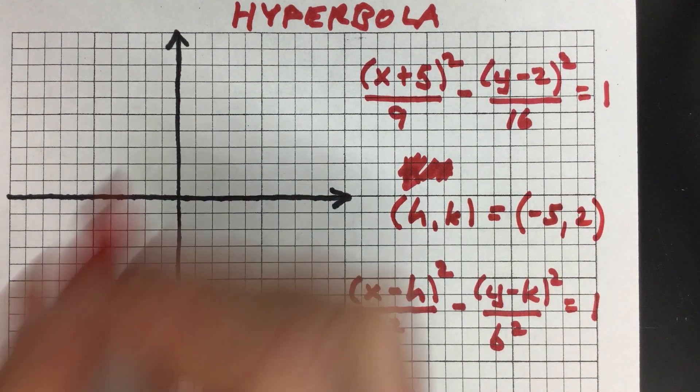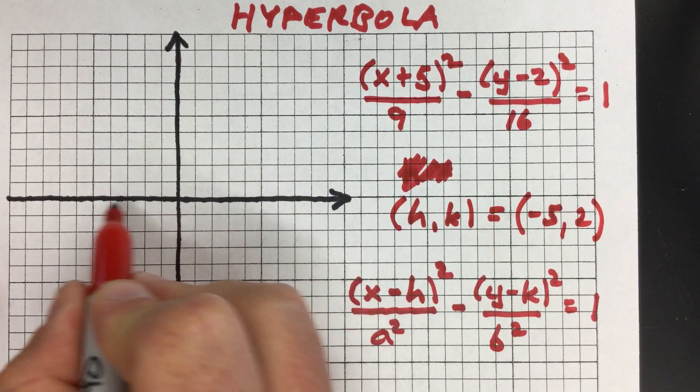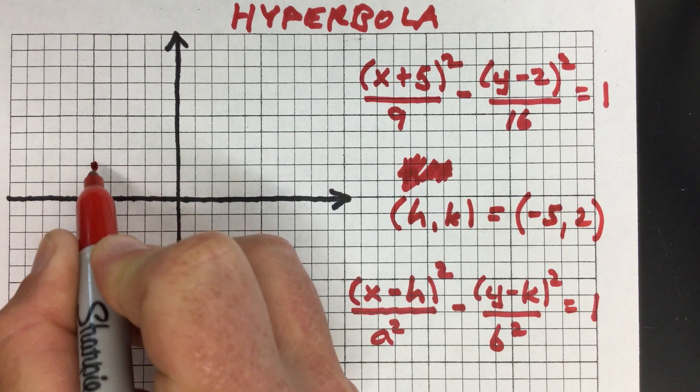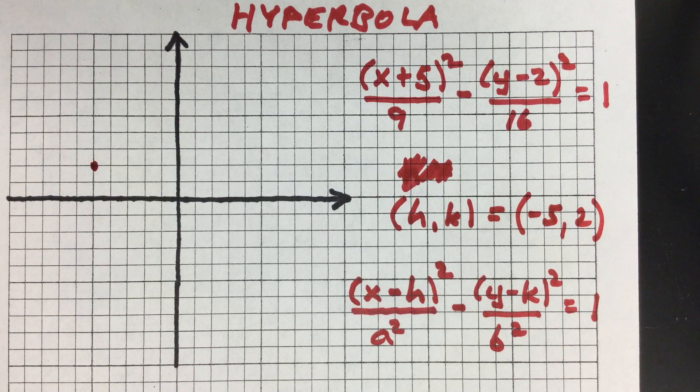What we want to do is go over to x equals negative 5 and up 2. So this is going to be centered around that point. That's your center point.